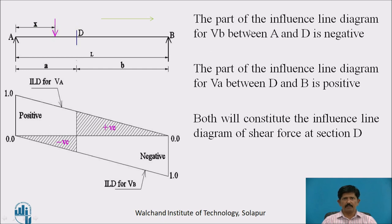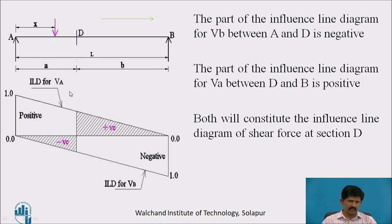Now, combining both parts: the part of the influence line diagram between A and D for VB is negative, and the part between D and B for VA is positive. Together, they constitute the influence line diagram for the shear force at section D. The left side constitutes a negative value and the right side constitutes the positive value for the shear force at section D.